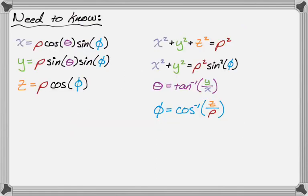This is a general list of all the spherical stuff, so we know that x is rho cosine theta sine phi, y is rho sine theta sine phi, z is rho cosine of phi, and that's going to be the most important one because horizontal planes have equations z equals something.